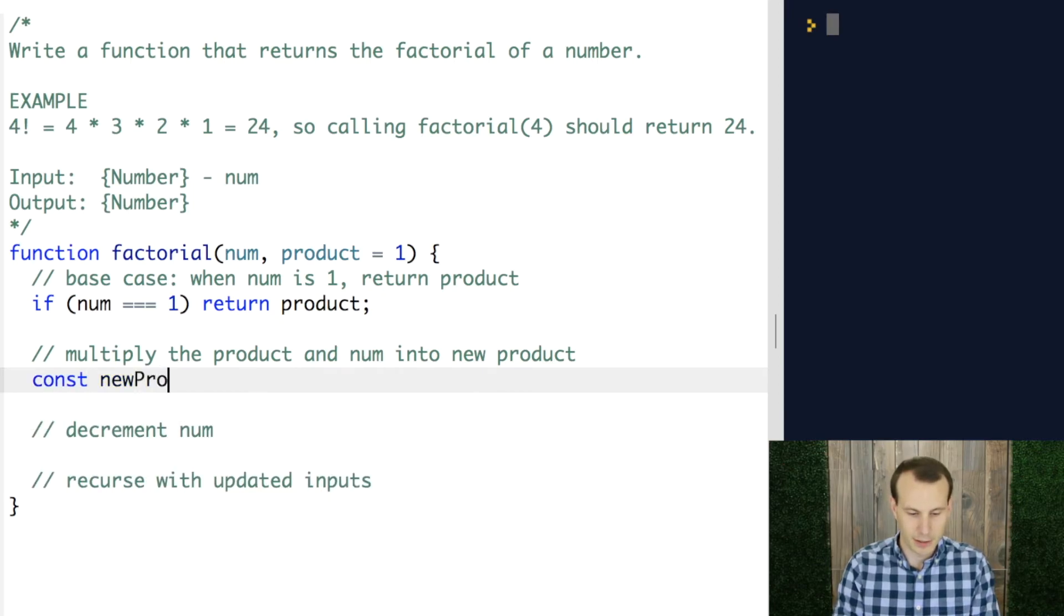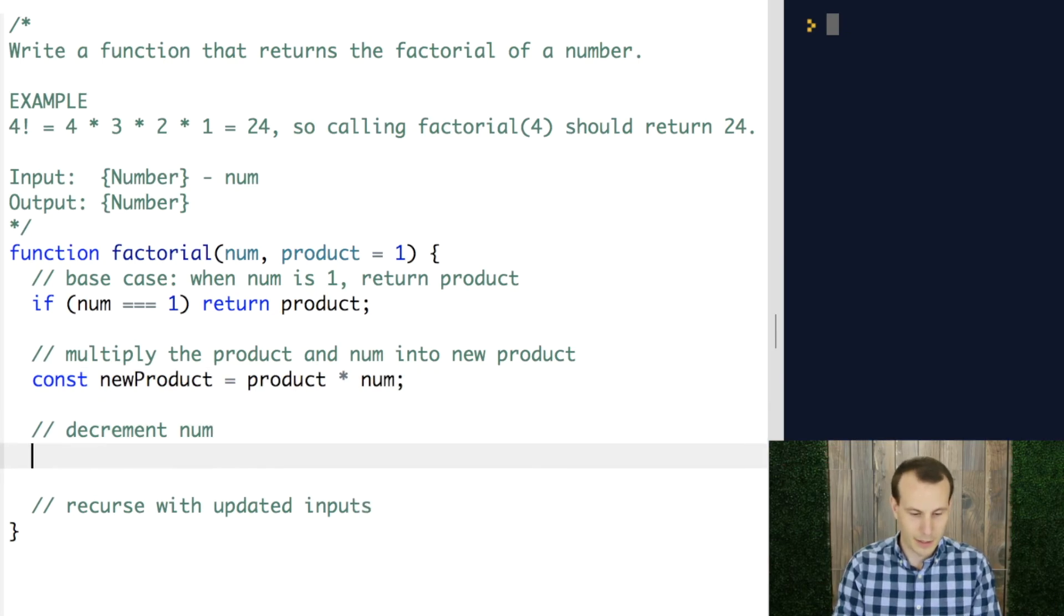And then here, we're saying let's multiply the product and the number into a new product. So, I'll write a new variable for this called new product. And this will be the product that was passed in on this call times the number that was passed in on this call.